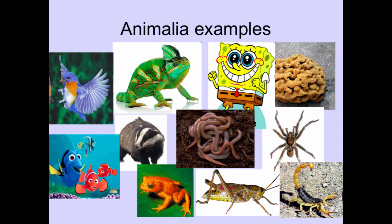Animals can also be very diverse — from something as simple as sponges, to worms, to insects like the cricket, to arachnids like the scorpion and spider, amphibians like the frog, reptiles like the chameleon, birds, fish, and even mammals like the wolverine. Kingdom Animalia is probably one of the most diverse, so go ahead and write a couple of examples down.